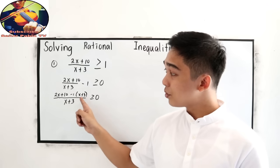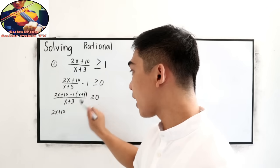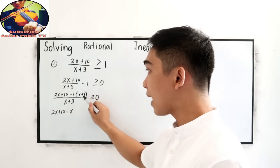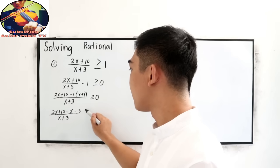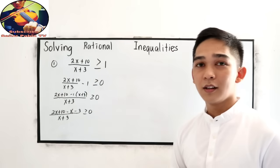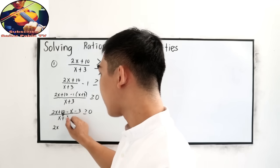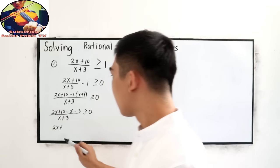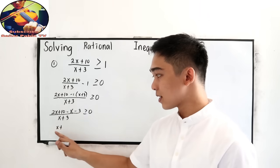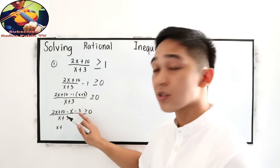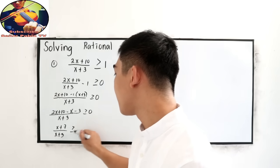We need to simplify our numerator. Copy 2x + 10. Negative 1 times x is −x. Negative 1 times positive 3 is −3. Over (x + 3), greater than or equal to 0. Simplifying the numerator: combine 2x − x = x, and 10 − 3 = 7. So we get (x + 7) / (x + 3) ≥ 0. That is our simplest form.